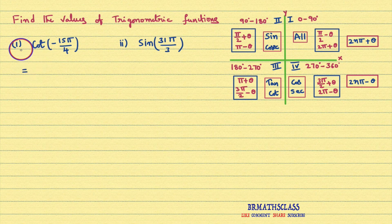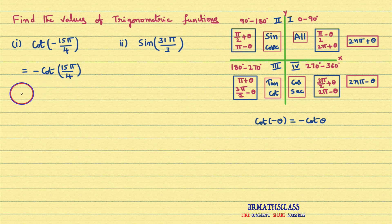First observe this: cot of minus 15π by 4. In trigonometry we learn this formula: cot of minus theta is minus cot theta. So this can be written as minus cot 15π by 4.